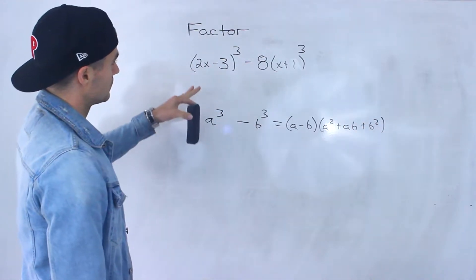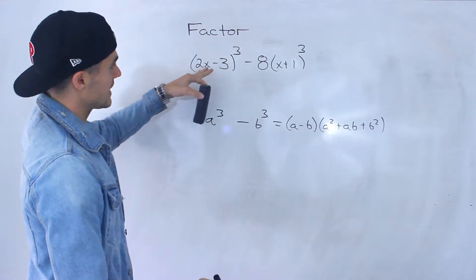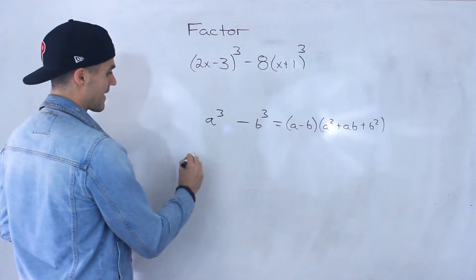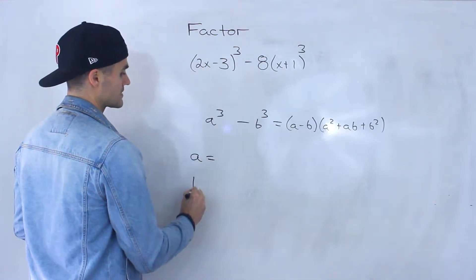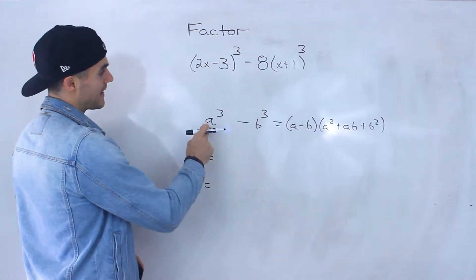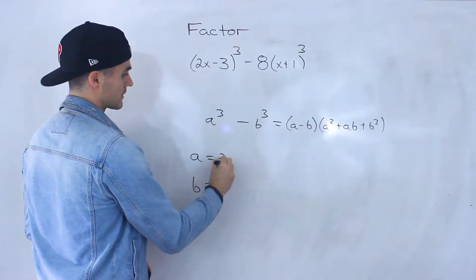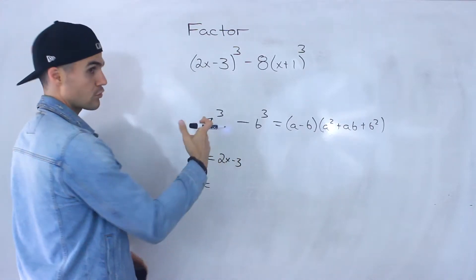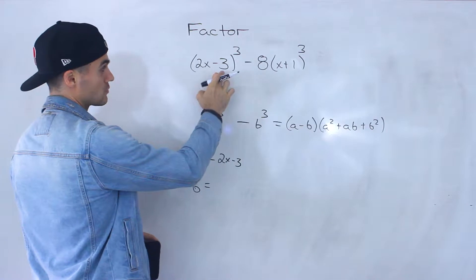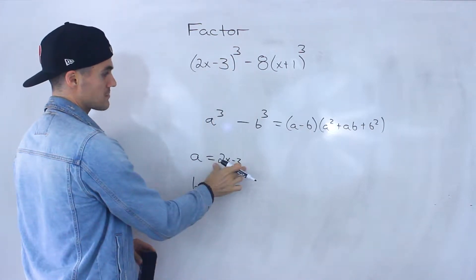And so if we take this expression, what's the a going to be in this case? And what's the b going to be? Well, the a is going to be the third root of this. So it's going to be 2x minus 3. The third root of (2x-3)³ is just 2x minus 3.